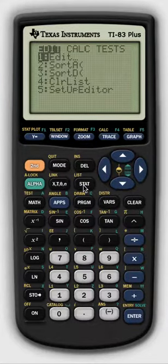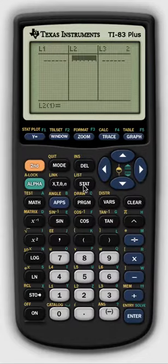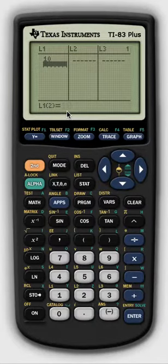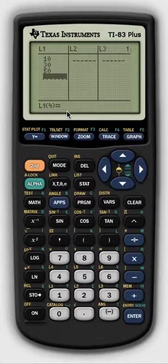Next thing we'll do is go into our stats menu and we're going to choose number one to edit, and we're going to use the cursor key to go to list one, and we're going to set in our first set of data points here. So this is a midpoint of a scores and frequency table. So the first number is 10, 30, 50, 70, and 90.